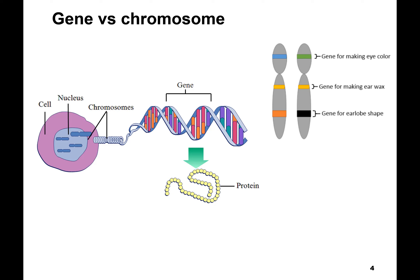Just one more illustration of the difference between a gene versus your chromosome: a gene codes for a protein. You have about 22,000 genes in your DNA dispersed amongst all your different chromosomes. This illustration is just trying to bring home the message that genes are just small regions on a chromosome, and they encode for a protein — something that's going to have a function in your cell.